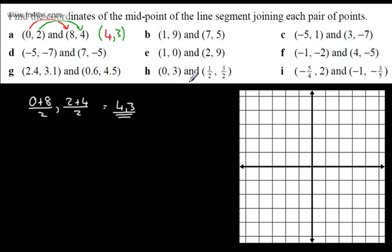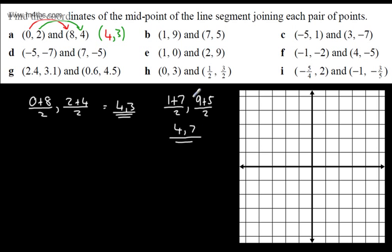Adding the x's: 1 plus 7 divided by 2 gives 8 over 2, which is 4. Adding the y's: 9 plus 5 divided by 2 gives 14 over 2, which is 7. Alternatively, you've added 6 in x so add half (3), giving 4; and subtracted 4 in y so subtract 2, giving 7. The midpoint is (4, 7).